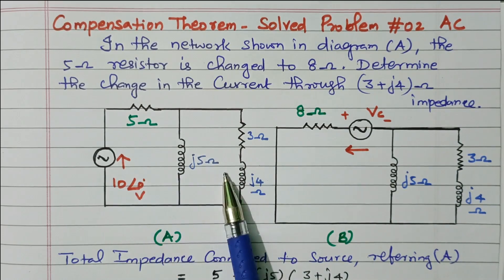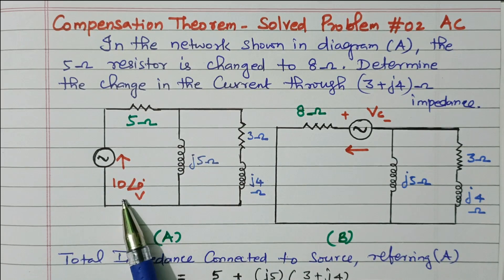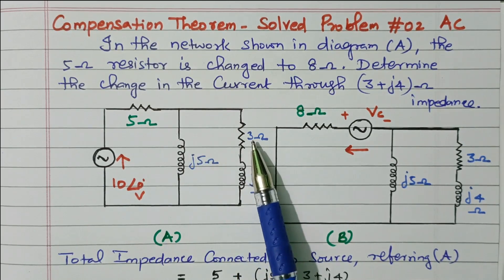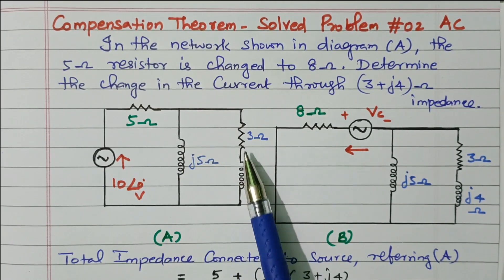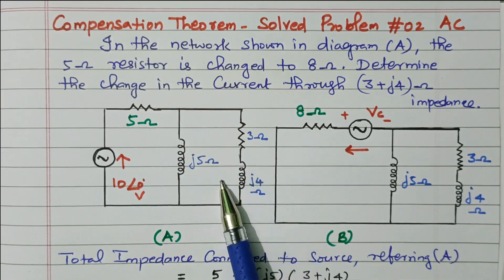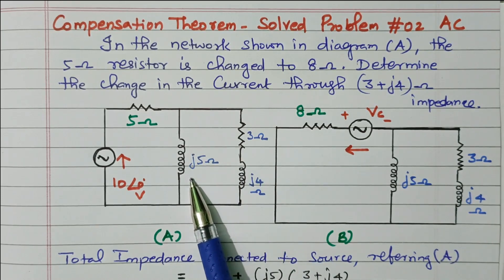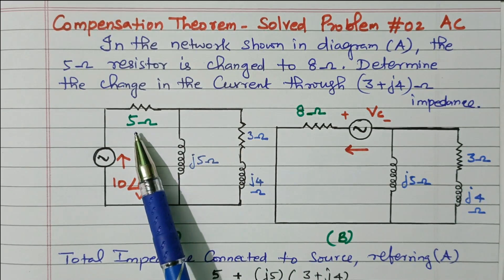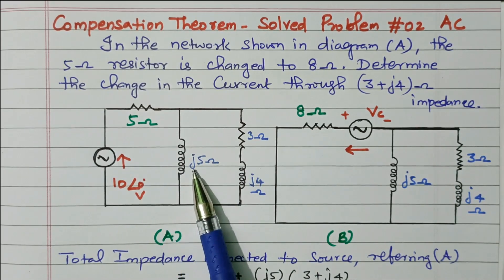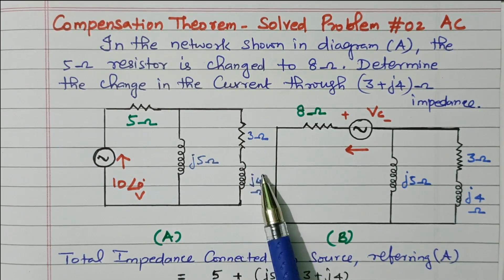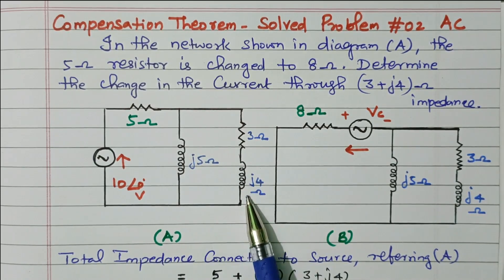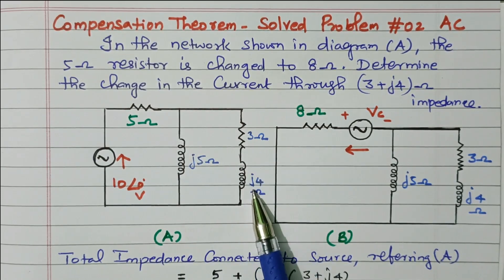What is the current flowing through network A? I equals V by R. What is the R value? These two are connected in series — the 3 ohm resistor and J4 ohm inductor. That is in parallel with the J5 ohm inductor, and that is in series with the 5 ohm resistor. So: 5 plus J5 in parallel with 3 plus J4.